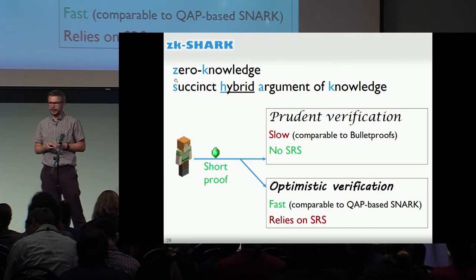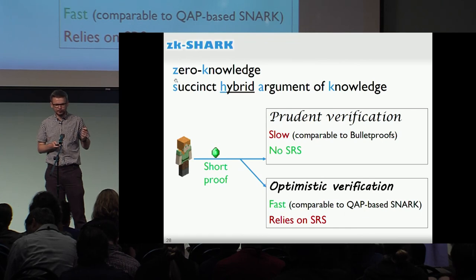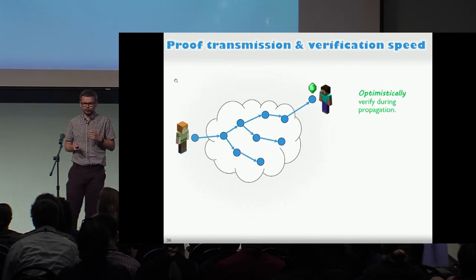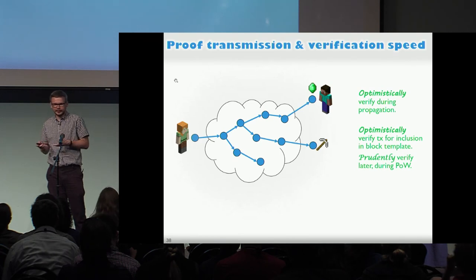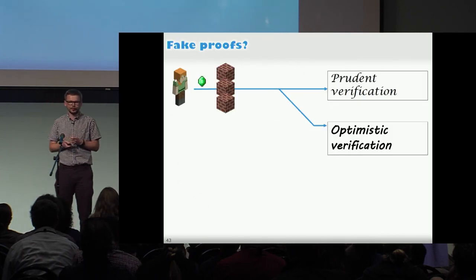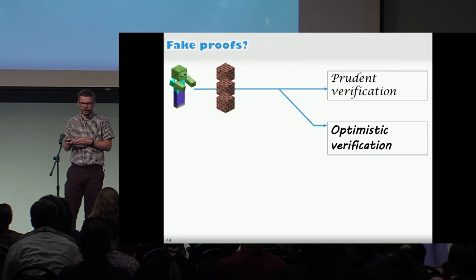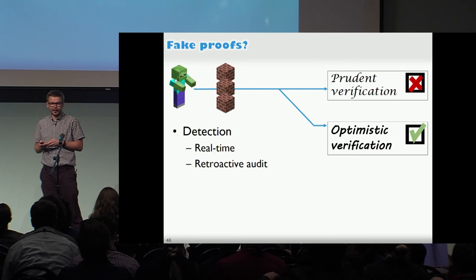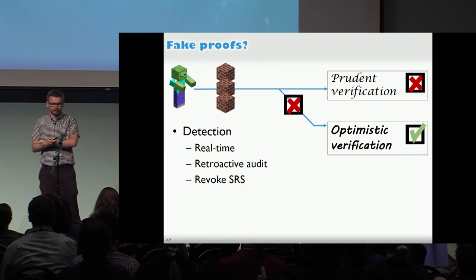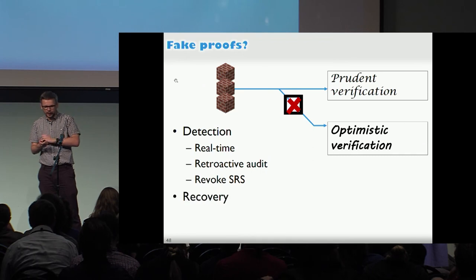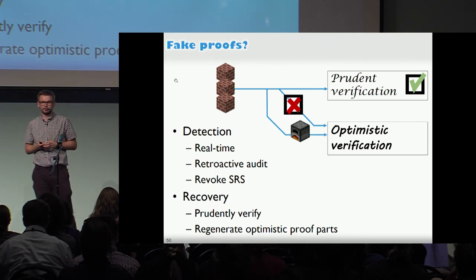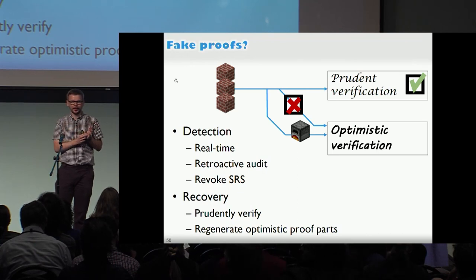Or optimistically, which is fast - just as fast as SNARKs - but relies on an SRS. In your blockchain scenario, this is as good as SNARKs, because everyone will verify everything optimistically. Then miners, during the proof of work, will do the prudent verification. This is incentive compatible. Note that we do rely on SRS - so what happens if optimistic verification succeeds but prudent does not? It leads to an immediate detection that your SRS has been compromised, so you can retroactively audit your old proofs. You can recover by first revoking the SRS, checking all old proofs using prudent verification, and then regenerating optimistic proof pairs.